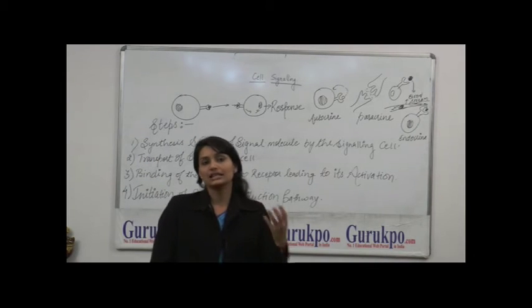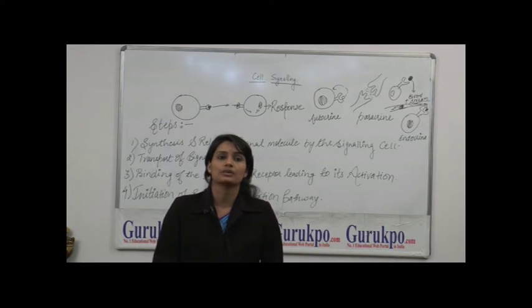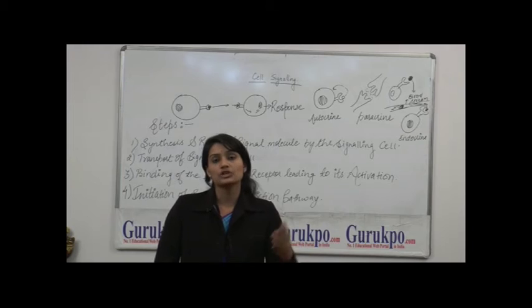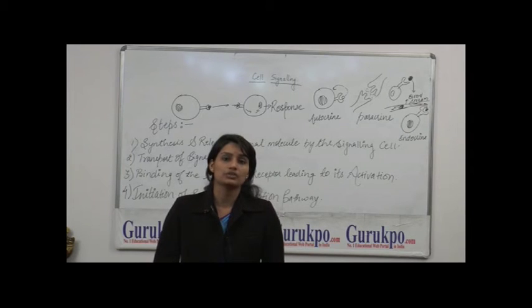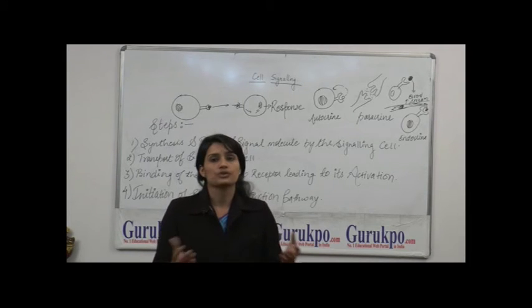Now, the signaling molecule binds to a particular site on the target cell. That site is known as receptor. Receptor can be of two types: intracellular receptors and cell surface receptors. If the particular molecule is able to cross the plasma membrane, then it will bind to the intracellular receptor. But if it is not able to cross the plasma membrane, then it will bind to cell surface receptor and produces response.